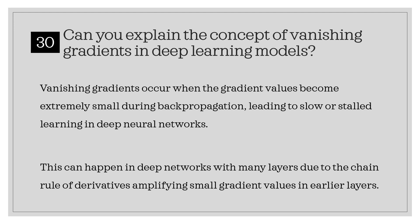Can you explain the concept of vanishing gradients in deep learning models? Vanishing gradients occur when the gradient values become extremely small during backpropagation, leading to slow or stalled learning in deep neural networks. This can happen in deep networks with many layers due to the chain rule of derivatives amplifying small gradient values in earlier layers.